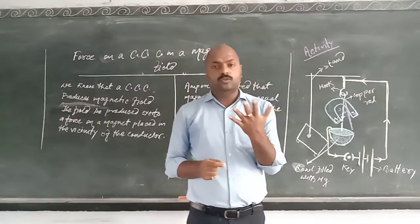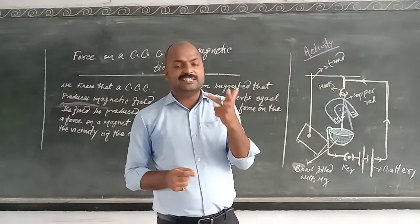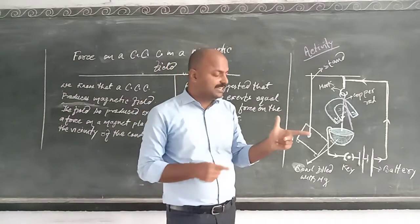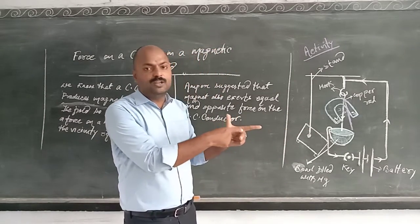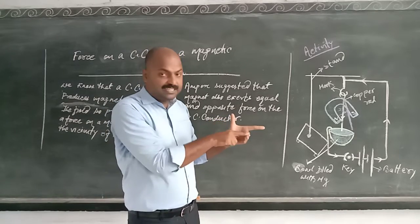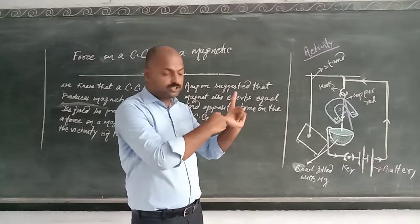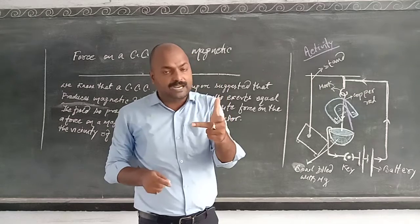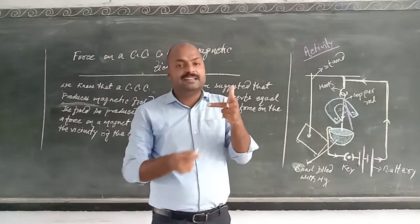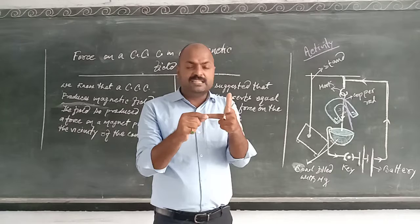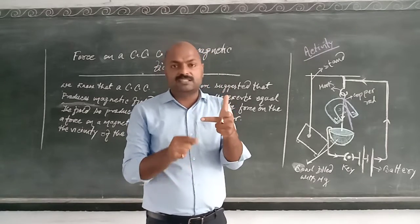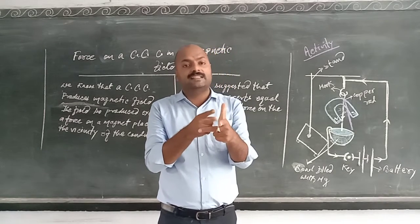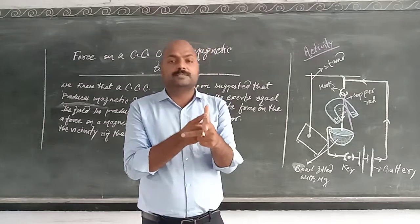Fleming's Left Hand Rule states that when you take your left hand and stretch your first three fingers mutually perpendicular to each other — as you can see, the thumb, the index finger, and the middle finger are all perpendicular to each other — then the index finger is directed towards the direction of the magnetic field, and the middle finger is directed towards the direction of current.